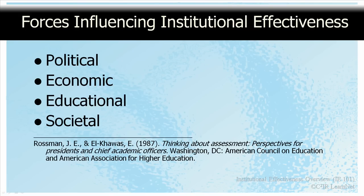From a different perspective, one can say, as Rossman and Hale-Kawas do, that institutional effectiveness has been driven by three primary forces: political, economic, and educational. Political pressures have come about from perceived weaknesses in higher education and the public's demand to know whether the high cost of education is justified. From an economic viewpoint, assessment is a way of ensuring that the workforce to support national, state, and local economies is well-trained and competent. And educationally, a number of educational reports, starting with the influential 'A Nation at Risk' in 1983, have called for assessing quality.